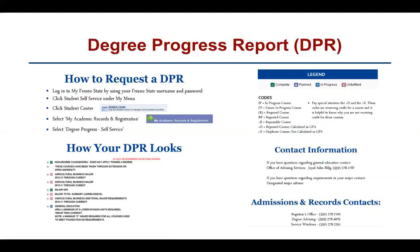So how do you request a DPR? You log into my Fresno State, click Student Self-Service under My Menu, click Student Center, select My Academic Records and Registration, and select Degree Progress Self-Service. Here is a small video on how to request a DPR and how your DPR looks.